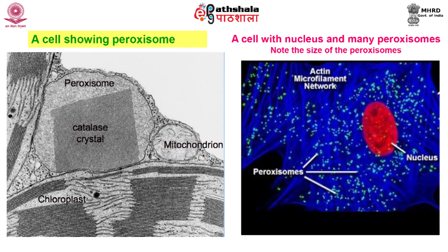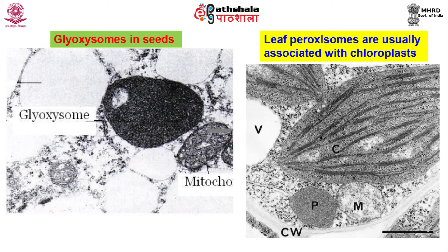Peroxisomes are referred to as microbodies and they can be observed under the electron microscope, where they are seen as cyan colored dots. There are four classes of peroxisomes commonly known in higher plants: glyoxysomes, leaf peroxisomes, root nodule peroxisomes, and unspecialized peroxisomes. Two of these — glyoxysomes and leaf peroxisomes — are shown here. All of them show a single membrane and finely amorphous matrix.